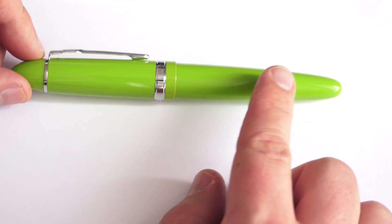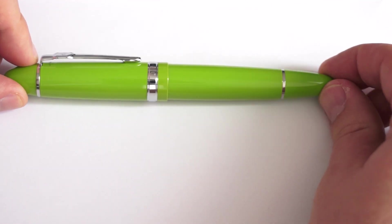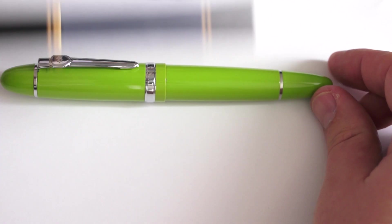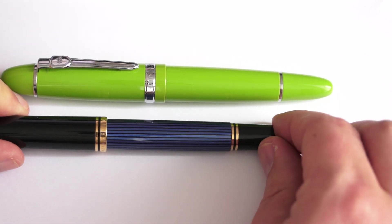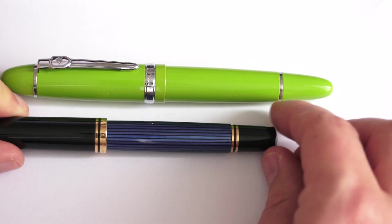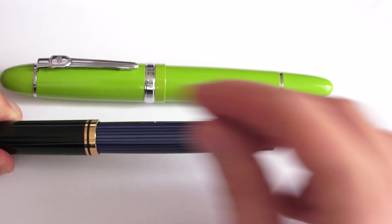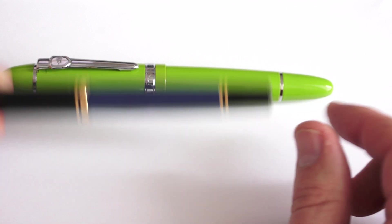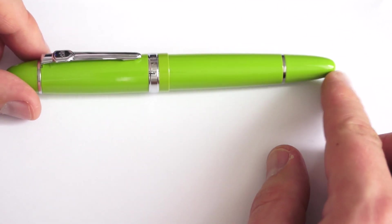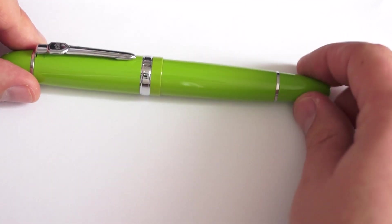The barrel ends with a ring that imitates the end of a piston like you see for Pelikan M800. While Pelikan M800, if you unscrew and open up, you can withdraw ink and fill up the barrel, this Jinhao 159 is not functional, so it's only for decoration purposes.